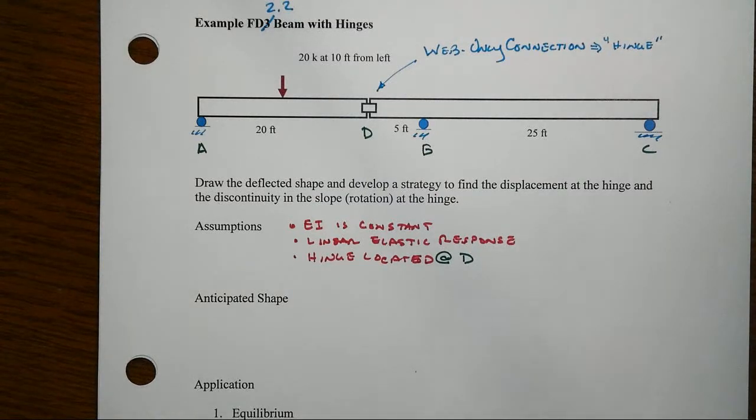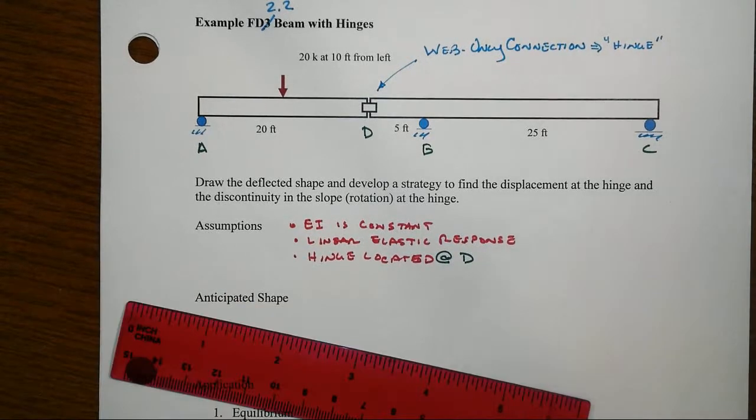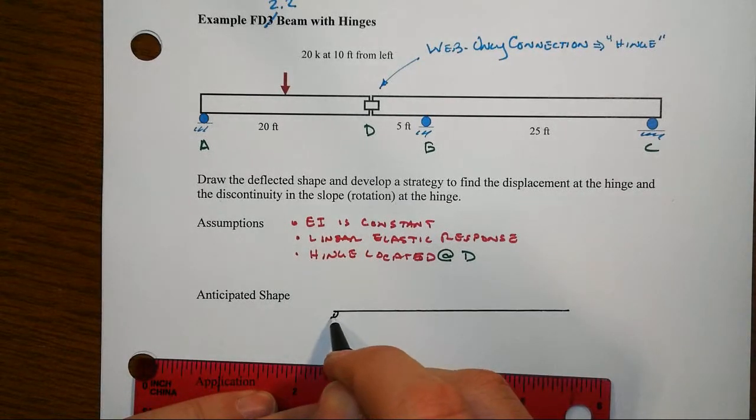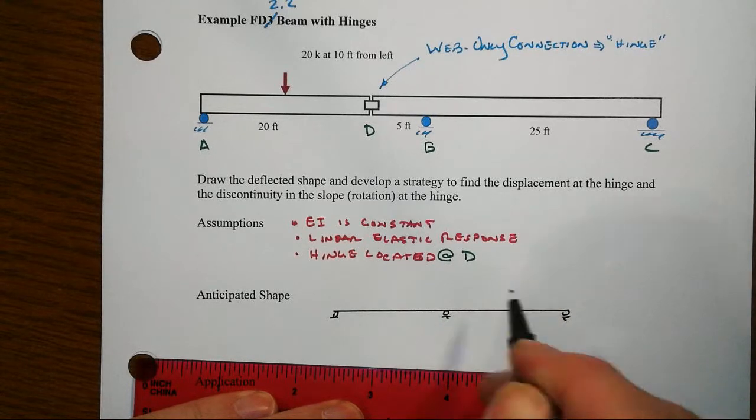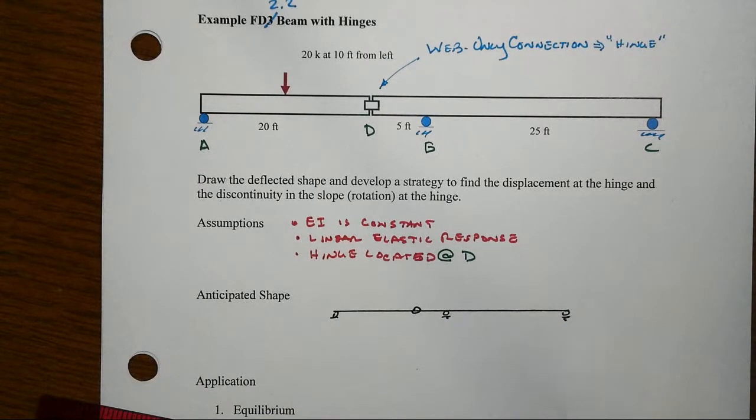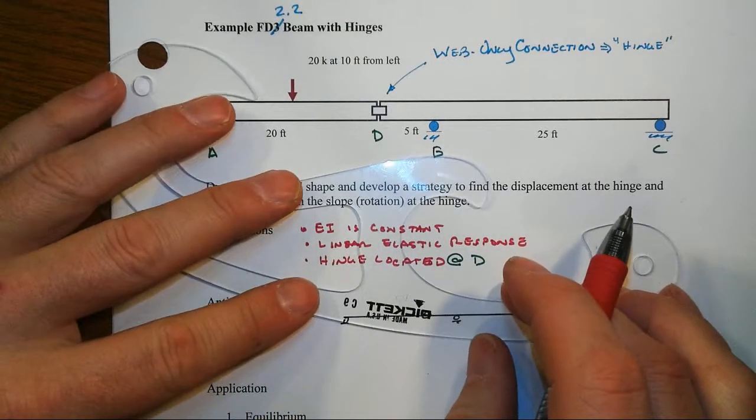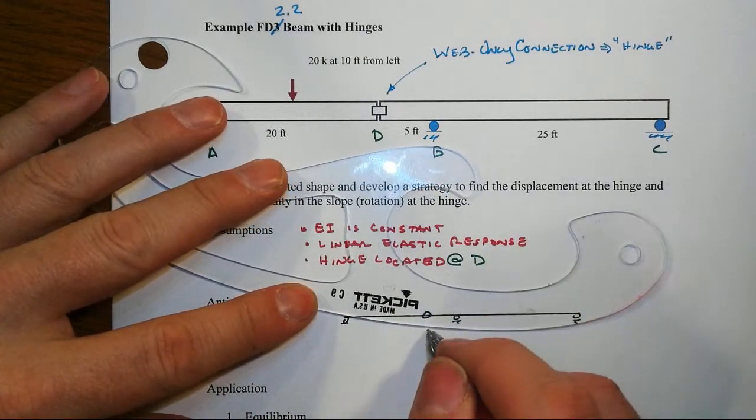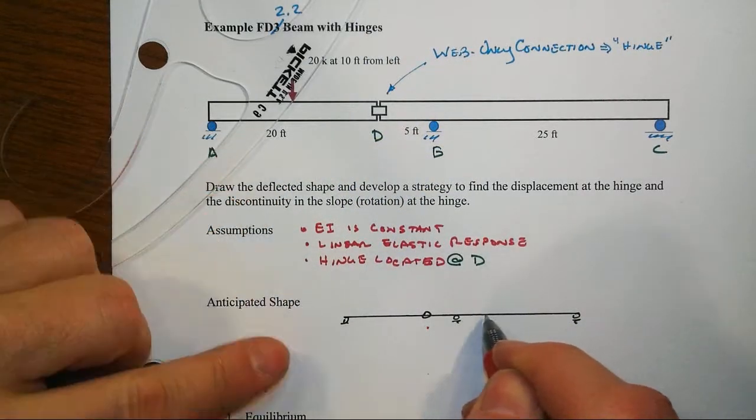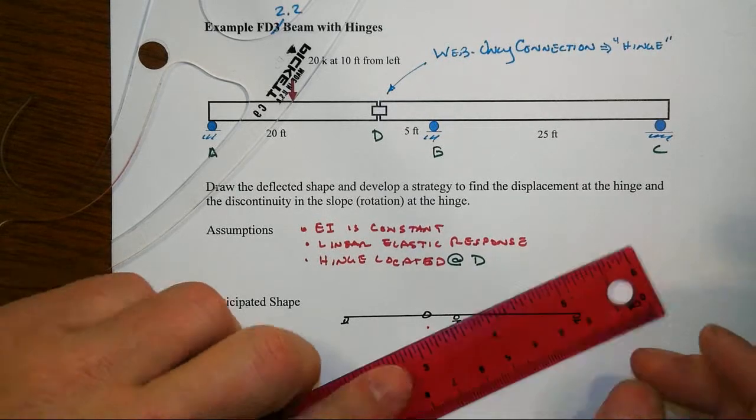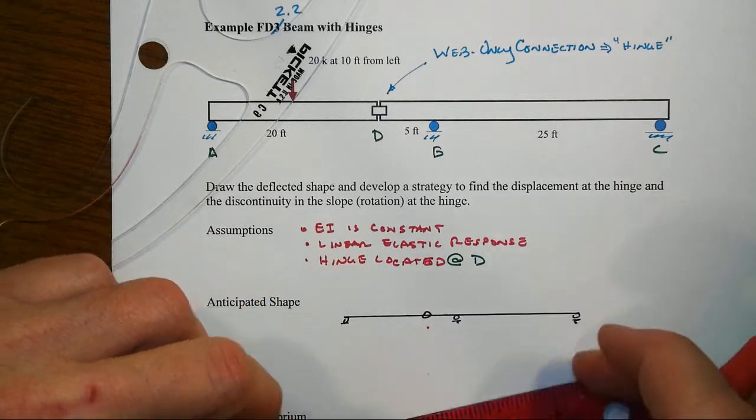I'm going to anticipate here that my shape in response to the loads might look something like the following. So, we've got supports in the middle, and then we also have this hinge located here. It would make sense to me that where the load is located that we're going to have some sort of sag going on. But where this hinge is located, that's going to also want to go down a little bit. And the thing about this is that that will go down, but that's connected to something else that has stiffness.